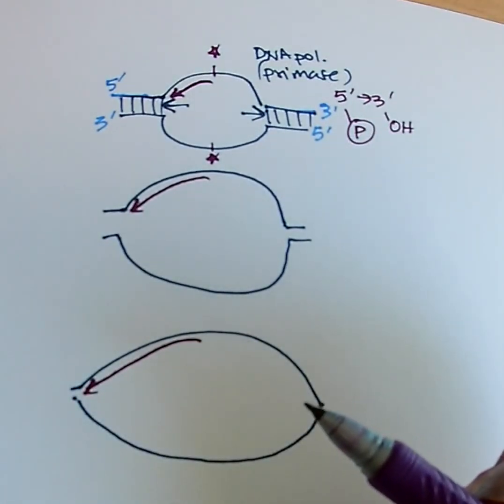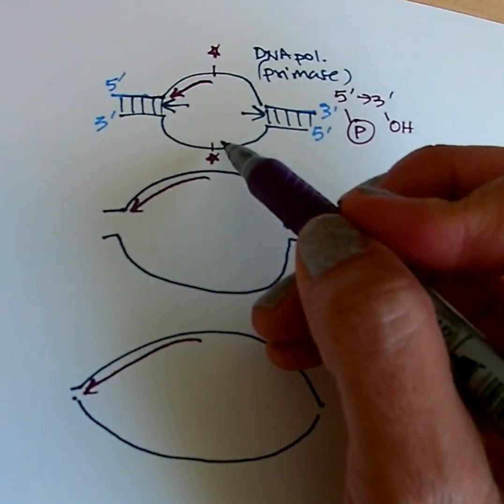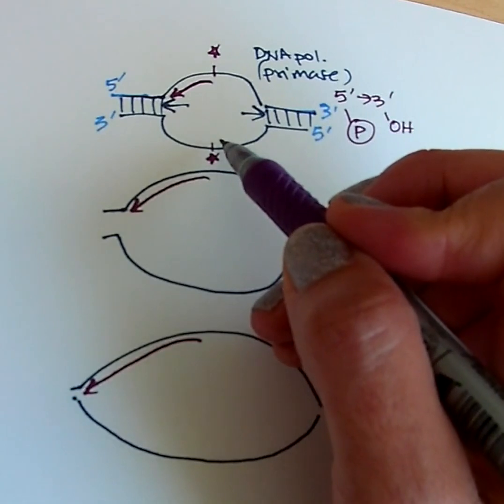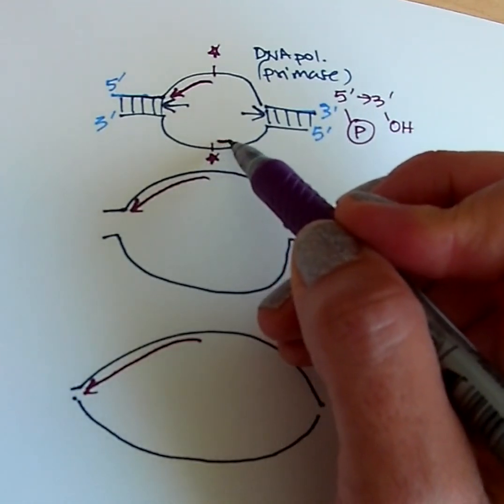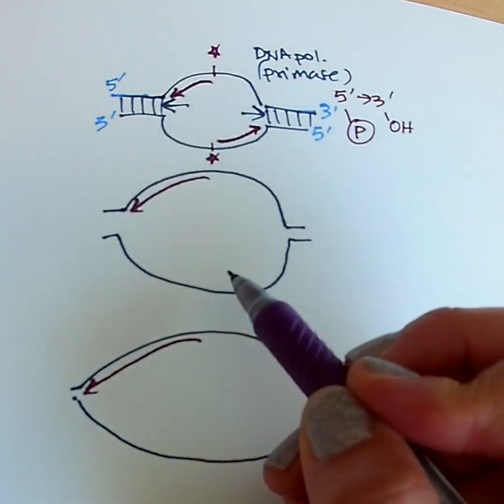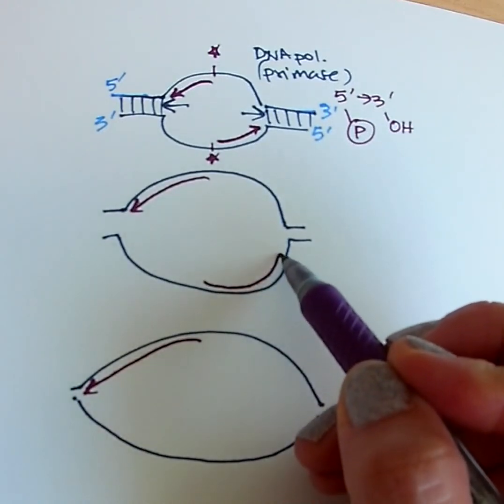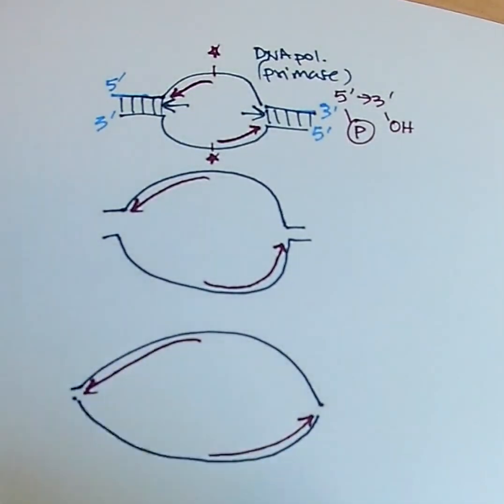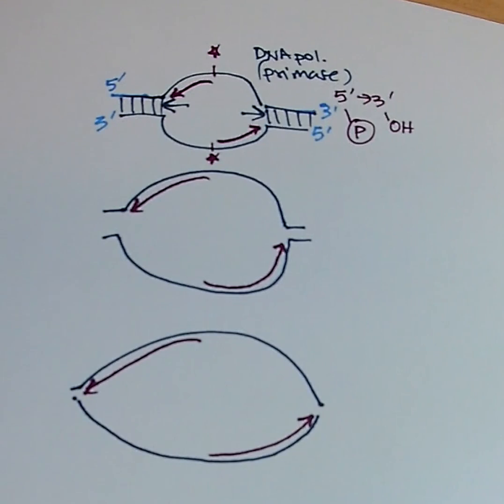Now the same is also going to be true of this piece over here. So over here, this is the three prime end and the five prime end. So the complementary antiparallel piece of DNA will be able to grow five prime to three prime as the fork opens up. It can keep on growing longer and longer. So in this case, we say that DNA polymerase is traveling in the same direction as helicase, and those are going to be opposite directions on the two pieces of DNA or two different strands of DNA.